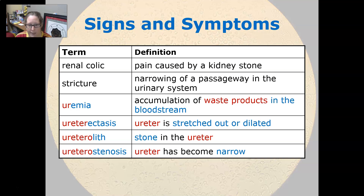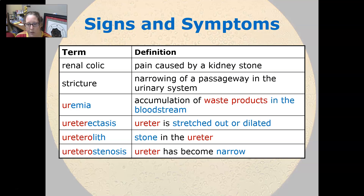Ureterectasis is when the ureter is stretched out or dilated. Ureterolith is a stone in the ureter. And ureterostenosis is when the ureter has become narrowed.